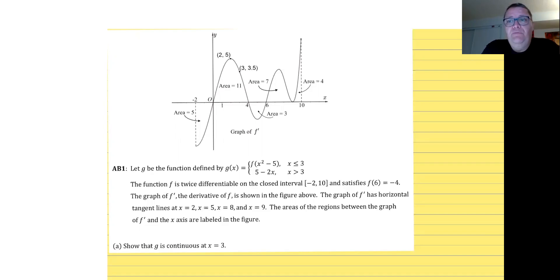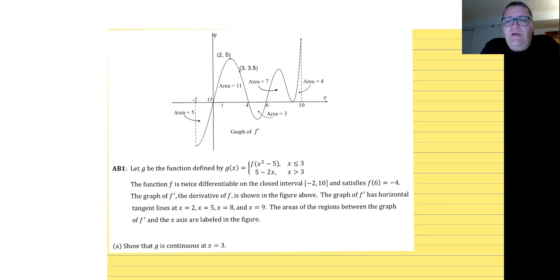The second piece of the piecewise function is 5 minus 2x for x greater than 3. Function f is twice differentiable on the closed interval from negative 2 to 10. Twice differentiable means that function is continuous, which is also important. It satisfies f of 6 equals negative 4, so we know a point on the graph of f. The graph of f prime has horizontal tangent lines at x equals 2, 5, 8, and 9, and the areas between the graph of f prime and the x-axis are all labeled in the figure.